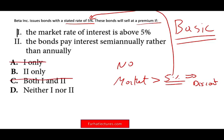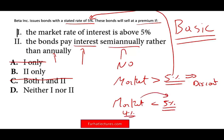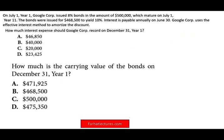The bond will sell at a premium if the bond pays interest semi-annually rather than annually? No — it doesn't matter how often the bond pays interest, whether semi-annually or annually; that doesn't affect whether it's sold at a premium or a discount. A bond will sell at a premium if the market rate is less than 5% — if the market is offering 4% and you're offering 5%, you sell at a premium. None of those statements comply, therefore the answer is D.